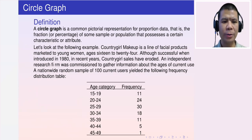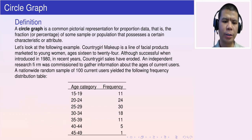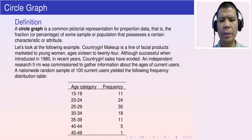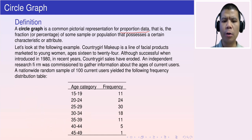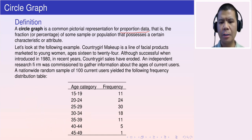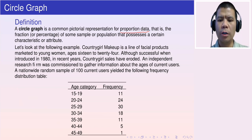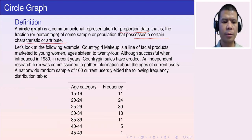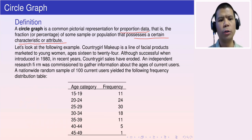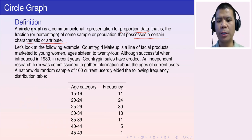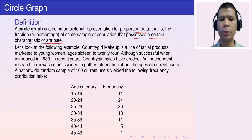Now let's move on to the circle graph. A circle graph is a common pictorial representation for proportion data — that is, the fraction or percentage of some sample or population that possesses a certain characteristic or attribute, such as the proportion of female students in a university.